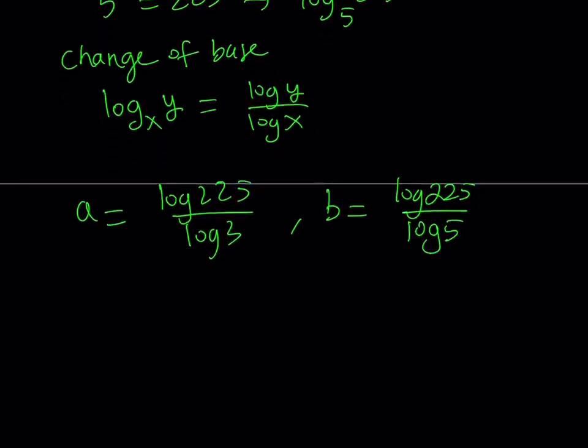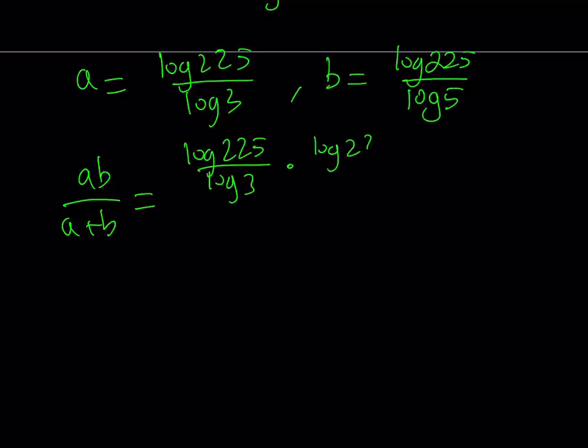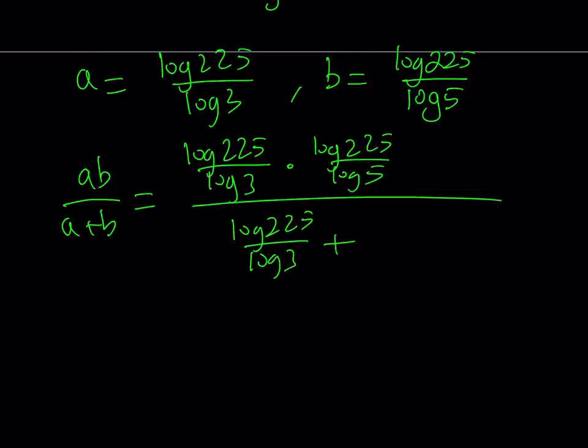Now I'm going to substitute all of this into my expression, which is ab over a plus b. Let's go ahead and plug it in. ab means a times b, so we're going to multiply these expressions: log 225 over log 3 times log 225 over log 5. And at the bottom we're supposed to add them: log 225 over log 3 plus log 225 over log 5.